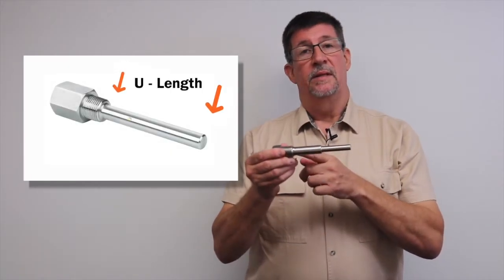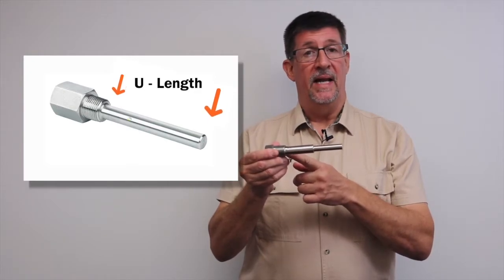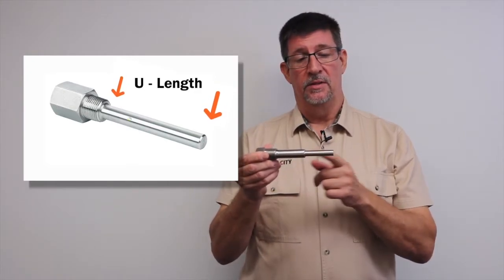The U-length is the dimension from the base of the threads or the base of the flange, if it's a flanged process connection, to the tip.